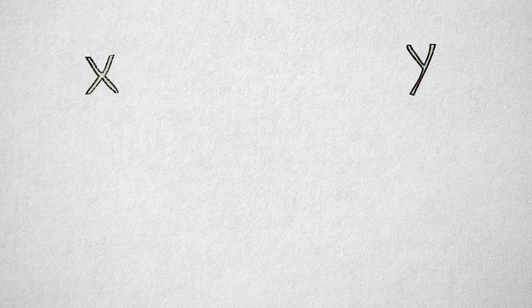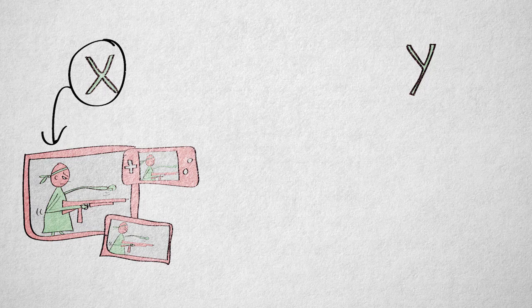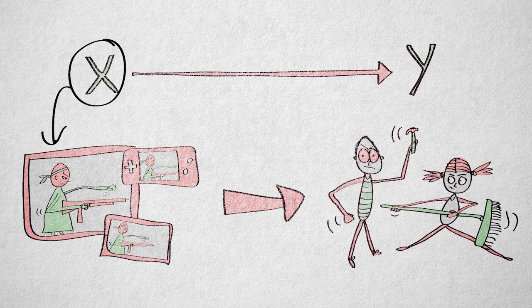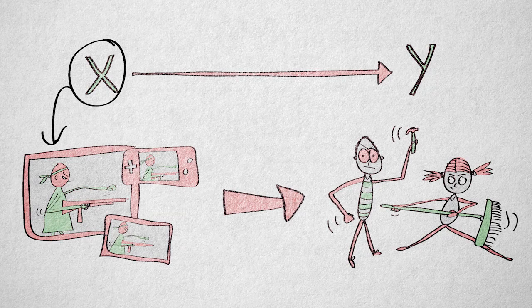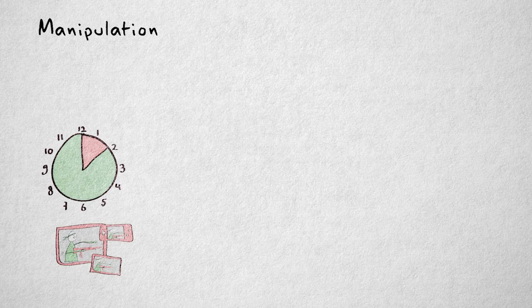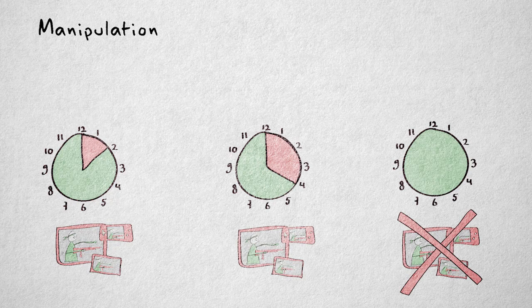Let's start with manipulation of the independent variable. Suppose we hypothesize that violent imagery is a direct cause of aggression. In order to test this hypothesis, we could manipulate the independent variable, violent imagery, by letting participants play a violent video game for either two hours, four hours, or not at all.